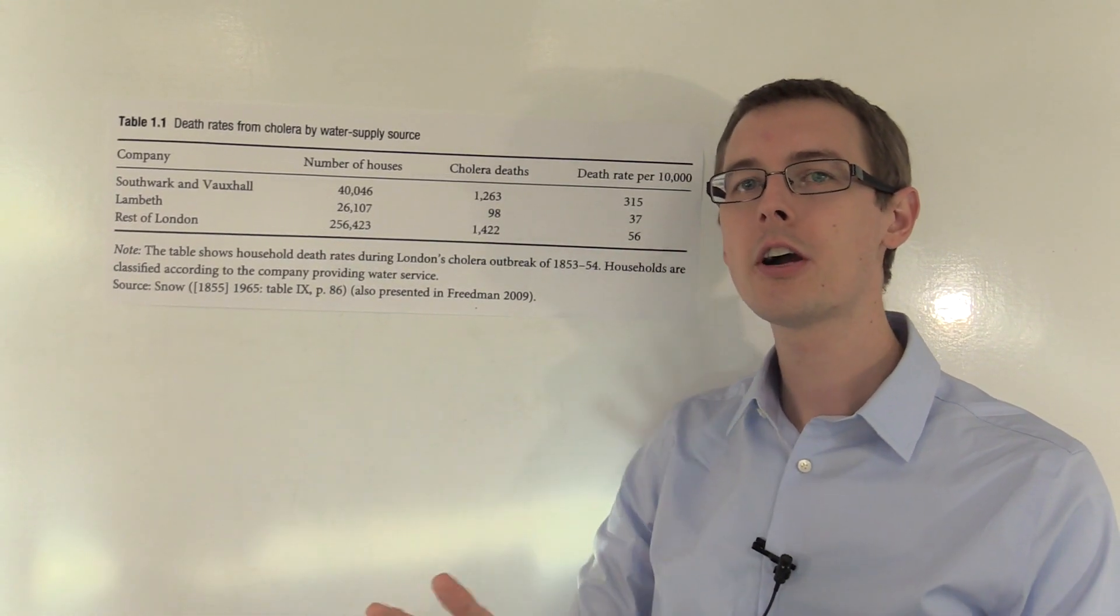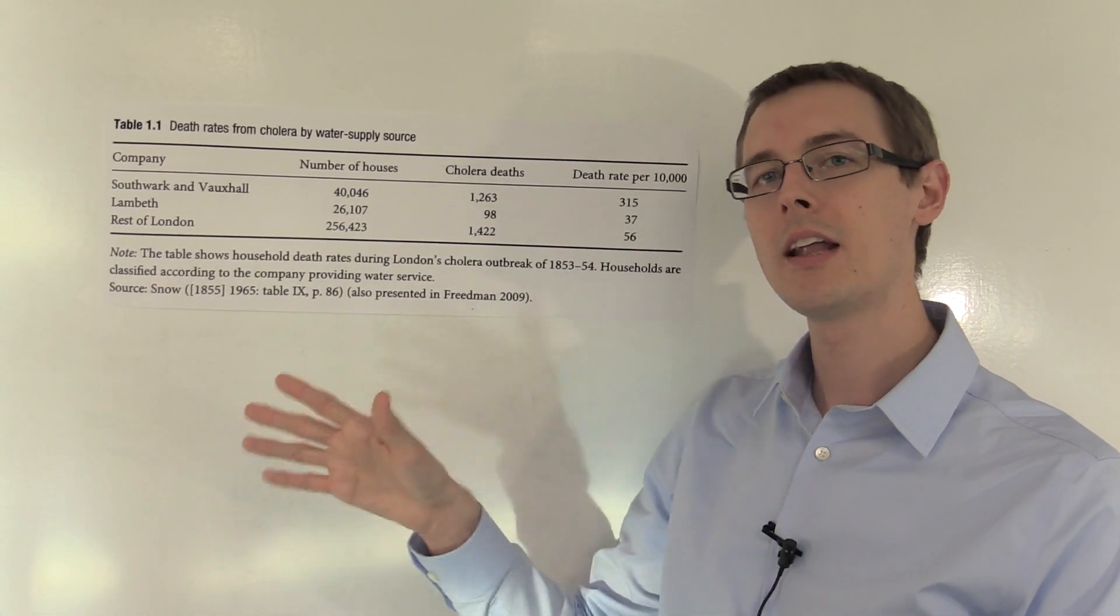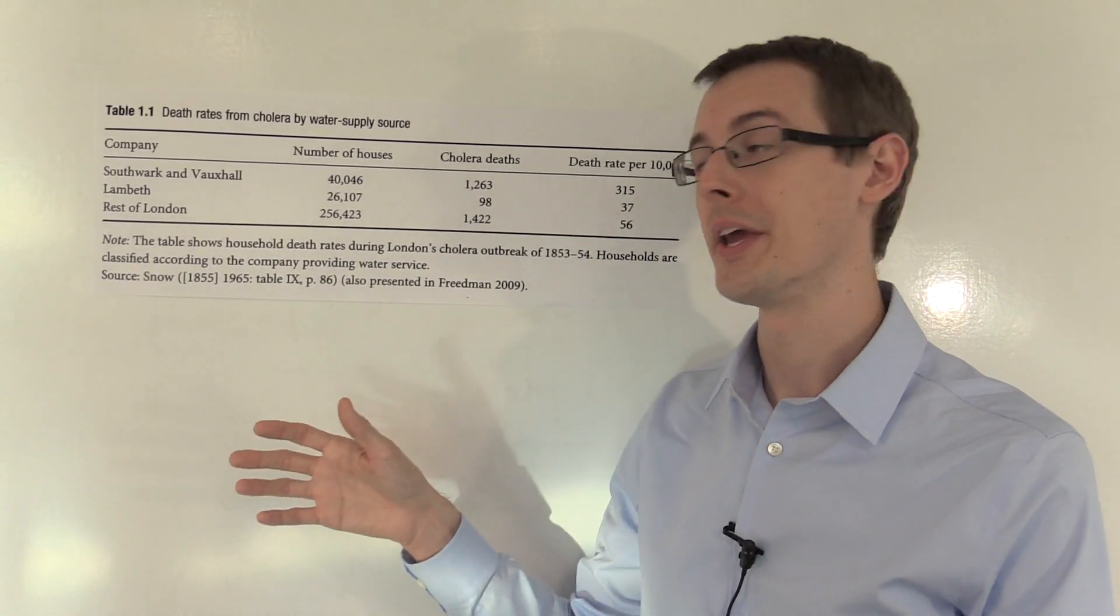If you believe that houses were basically randomly assigned to which company they got water from, then this is an as-if natural experiment, where all we have to do is compare the average rate of deaths due to cholera in these two groups to learn about the causal effect of consuming dirty water on whether you'll die from cholera. I'll talk about how we justify the as-if randomization assumption in a few minutes, but now let's just look at the data and see what we get.